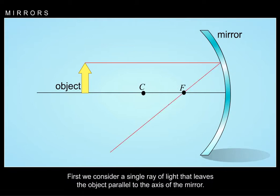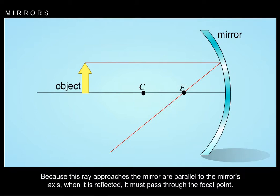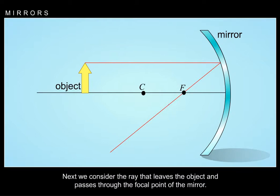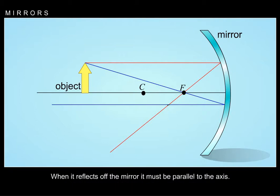First, we consider a single ray of light that leaves the object parallel to the axis of the mirror. Because this ray approaches the mirror parallel to the mirror's axis, when it is reflected, it must pass through the focal point. Next, we consider the ray that leaves the object and passes through the focal point of the mirror. When it reflects off the mirror, it must be parallel to the axis.